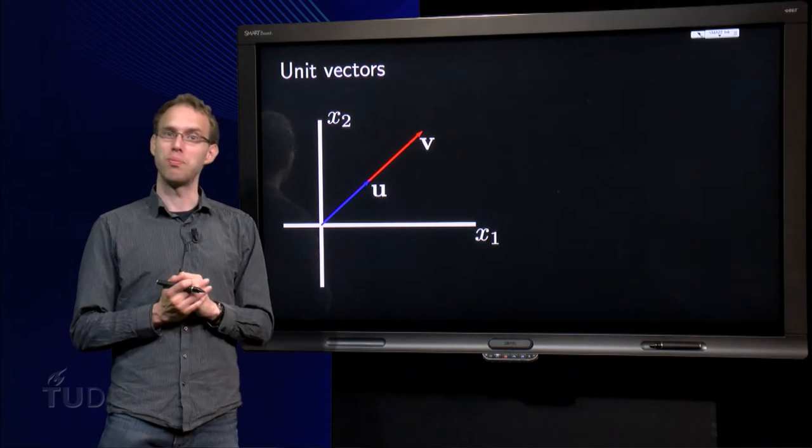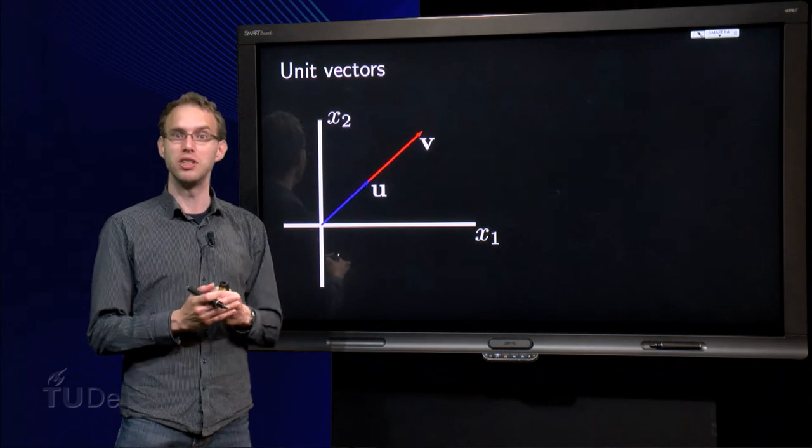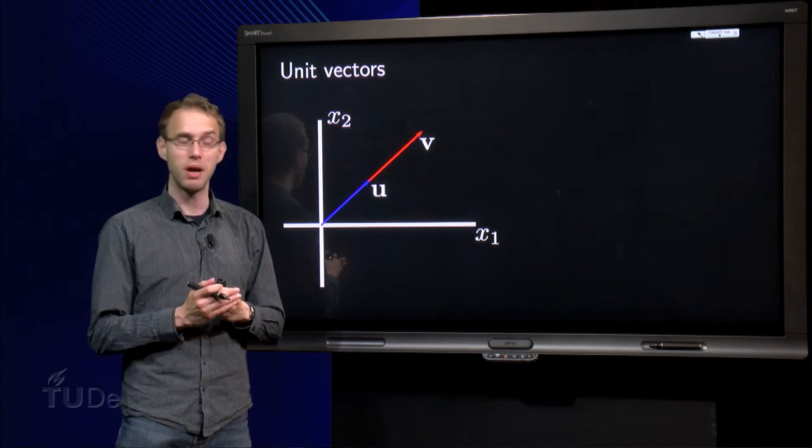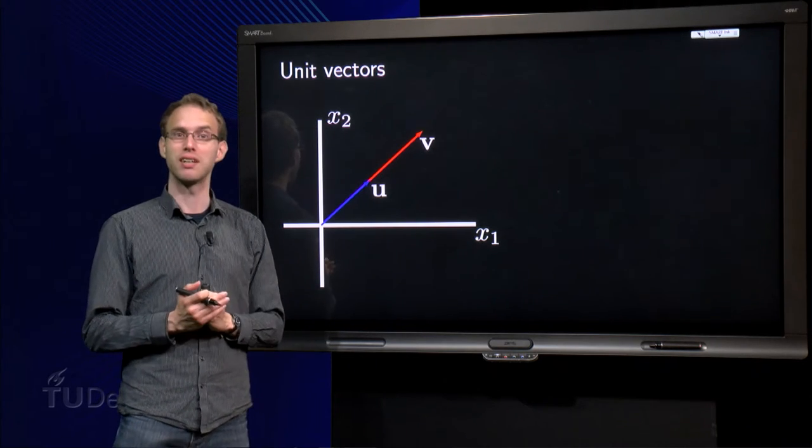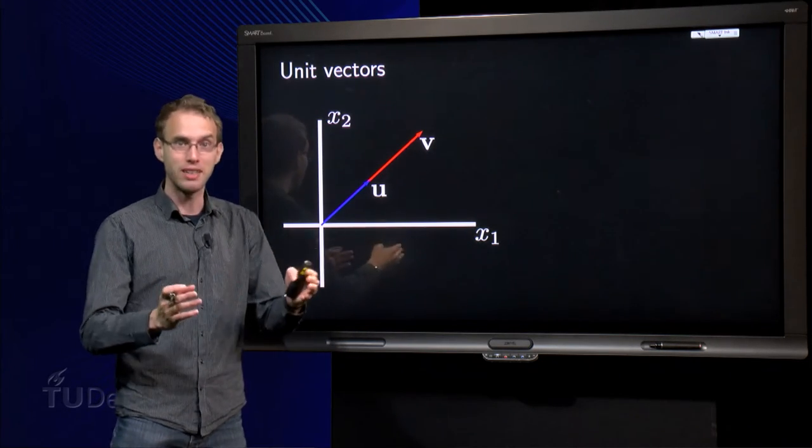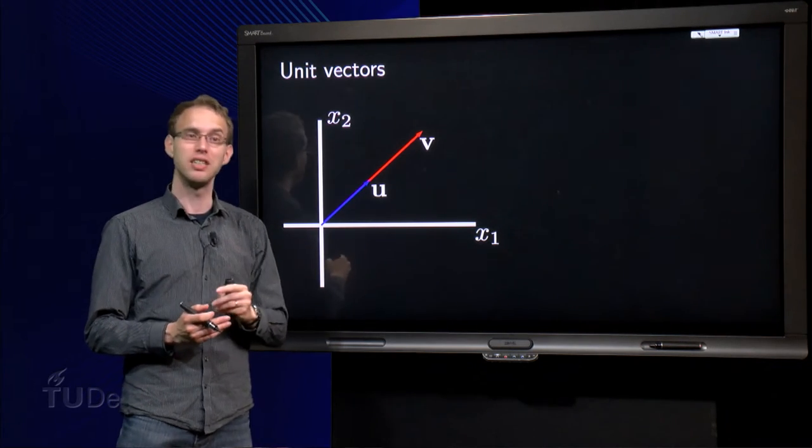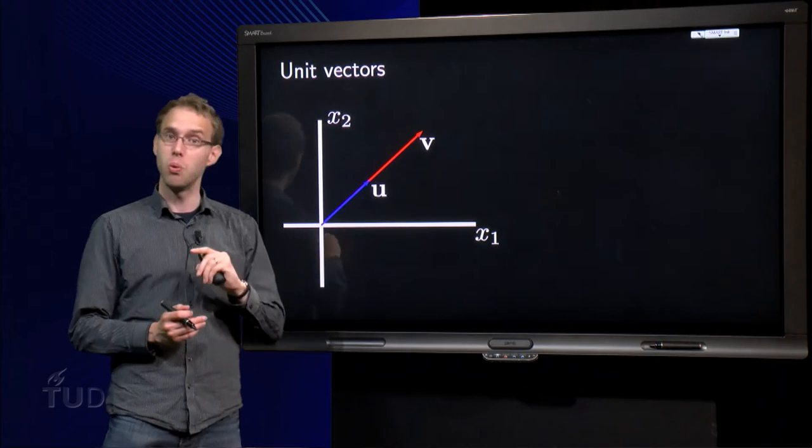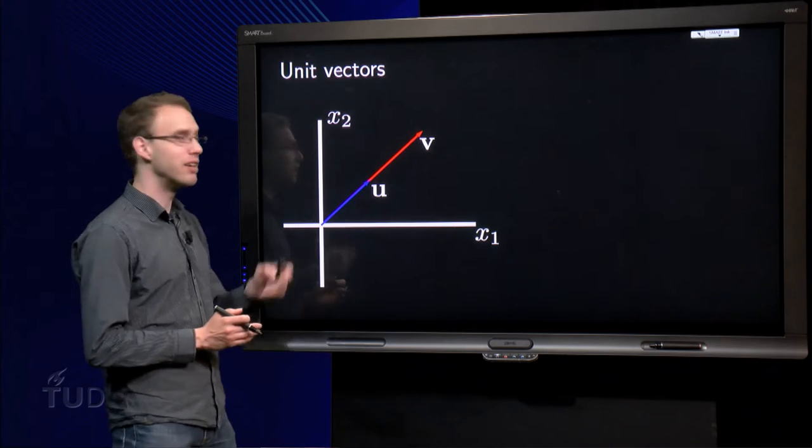So here we have the problem. The drawing is in R2, but in higher dimensions you will do it exactly the same way. You have a vector v, a given vector v with some length arbitrarily, and we want to find the vector u in the same direction, but with length equal to 1. So given v, how can we find u?